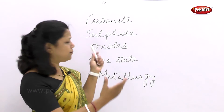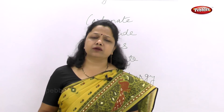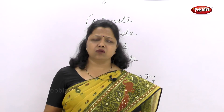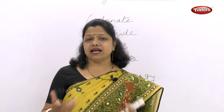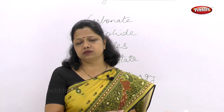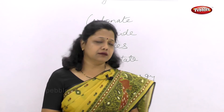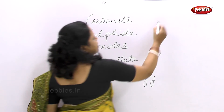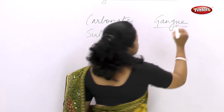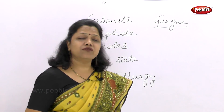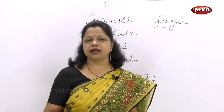These ores are present in the earth's crust. They will not come out as pure carbonate ores — they will be mixed with a number of impurities like sand, gravel, stones, and other oxide forms. All these impurities together are called gangue, spelled G-A-N-G-U-E. This gangue has to be first removed, and then only the process of extraction can take place.